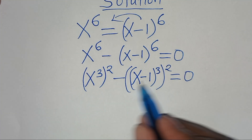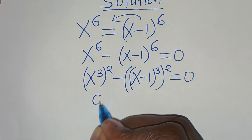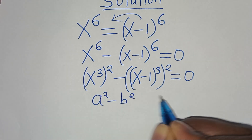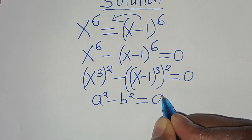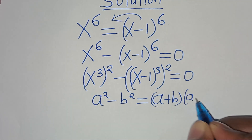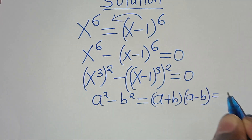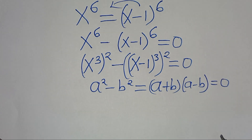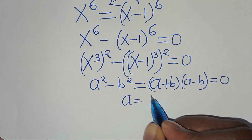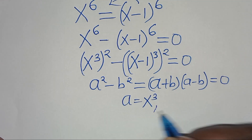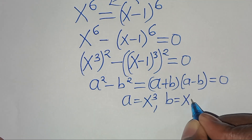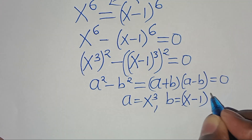Now this equation is in the form of a squared minus b squared, which is the difference of two perfect squares, that we can express as a plus b times a minus b, this is equal to 0. From this equation, we have that a is equal to x to the power of 3, and we have that b is equal to x minus 1 to the power of 3.